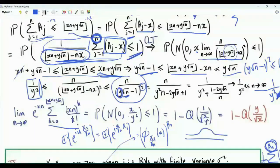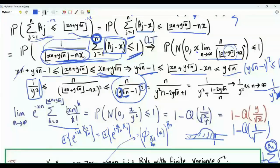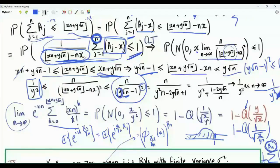Therefore, the limit of the summation multiplied by e to the minus xn is the probability that a zero mean Gaussian random variable with variance x over y squared is less than or equal to 1. This equals 1 minus the probability that the random variable is strictly greater than 1, which is 1 minus the Q function of 1 divided by the standard deviation, which is square root of x over y squared. So our limit is 1 minus the Q function with argument y divided by the square root of x. Recall that the Q function is the complementary CDF of a standard Gaussian random variable.